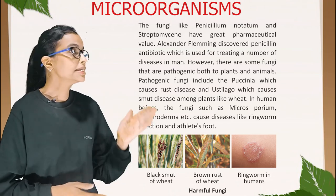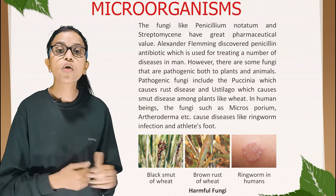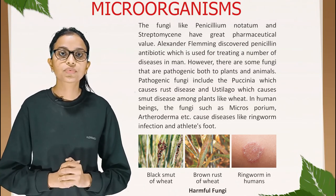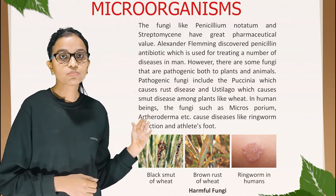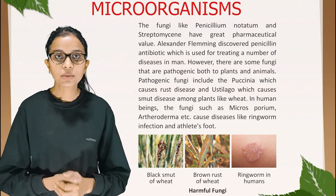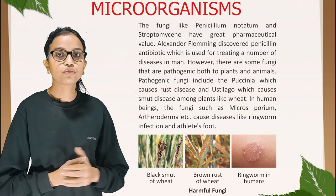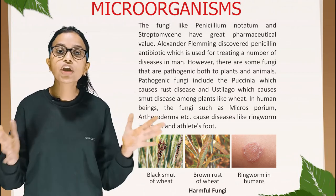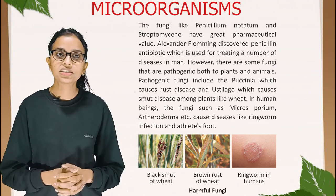However, some fungi are pathogenic to both plants and animals. Pathogenic fungi include Paxinia which causes rust disease and Ustilago which causes smut disease among plants like wheat. In humans, fungi such as Microsporum or Trichophyton cause diseases like ringworm infection and athlete's foot. These are pictures of harmful fungi: black smut of wheat, brown rust of wheat, and ringworm in humans.